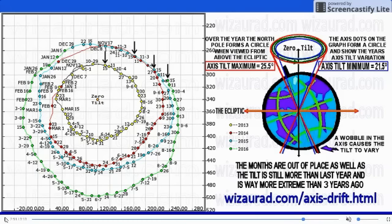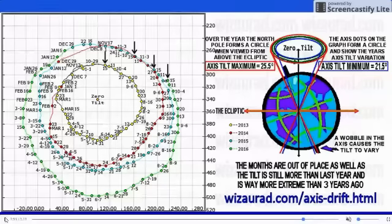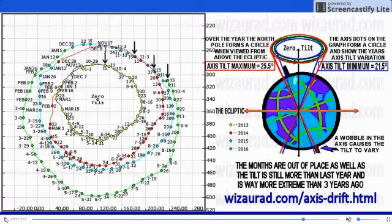At the maximum, we are at 25.5 degrees. Looking at the data on your screen clearly shows you that we've been in an extreme tilt since 2013.